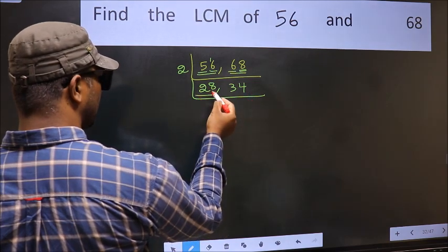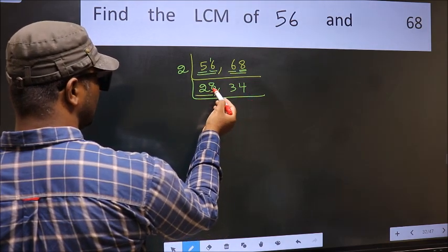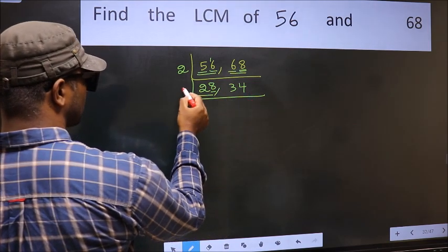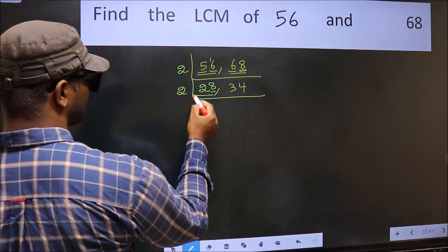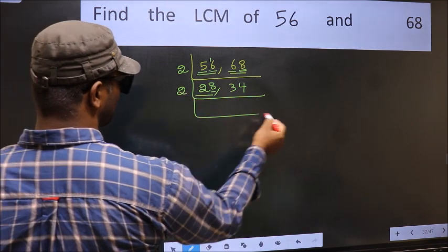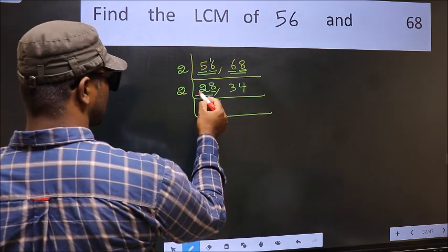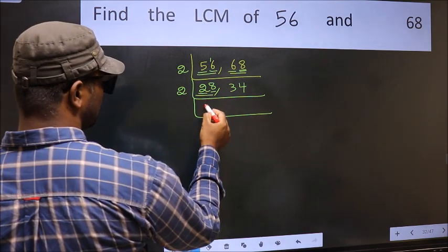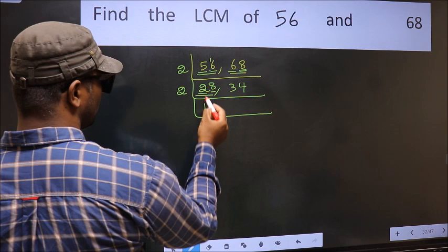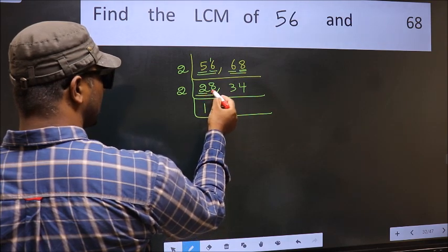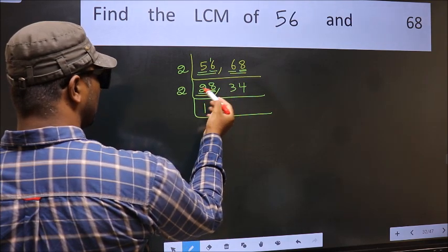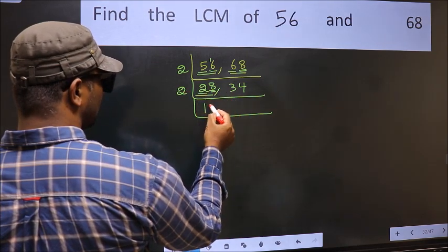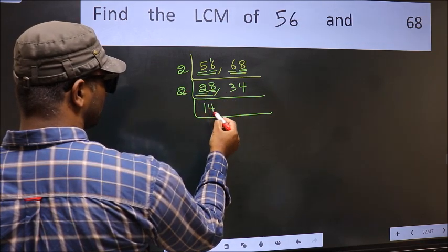Now here we have 28. Last digit is 8 — even, so take 2. First digit is 2; 2×1=2. The other digit is 8; 2×4=8. So 28 divided by 2 gives 14.